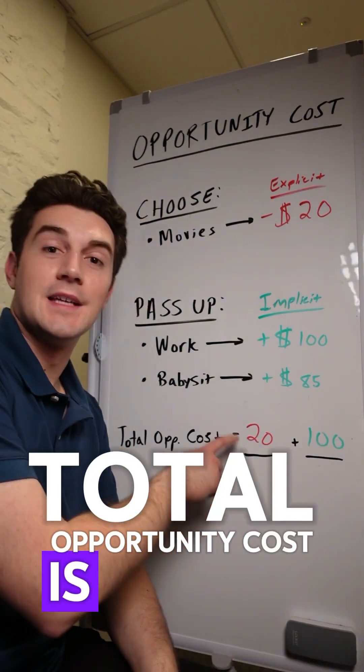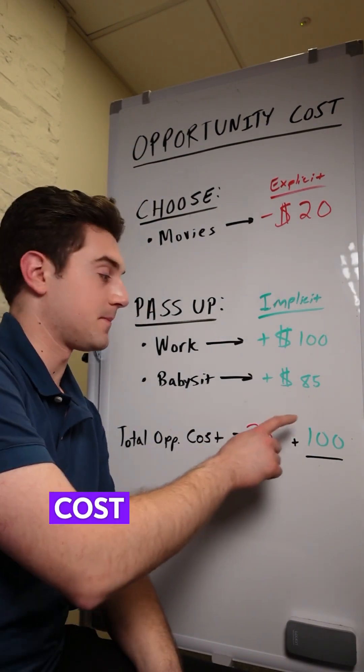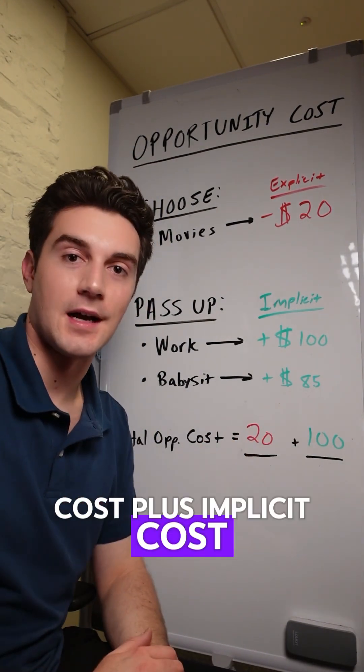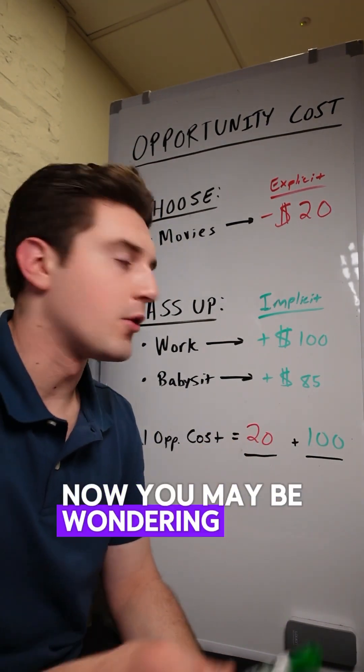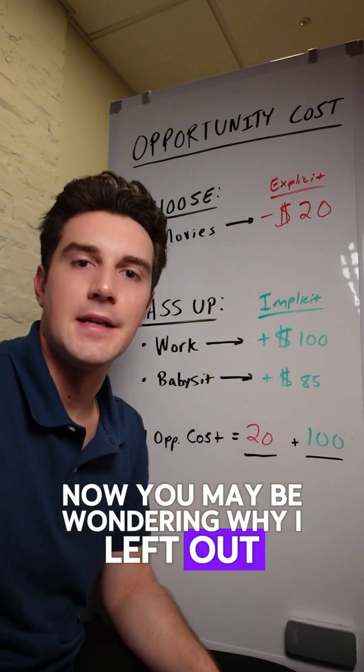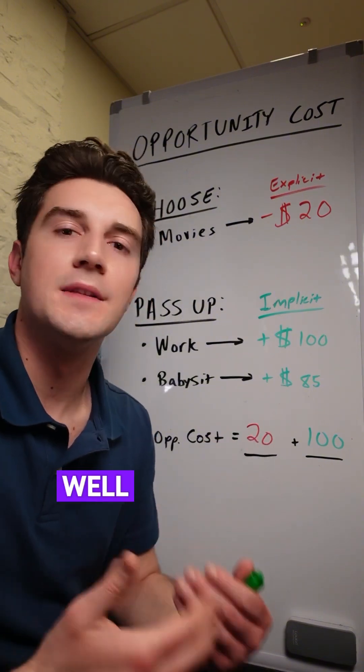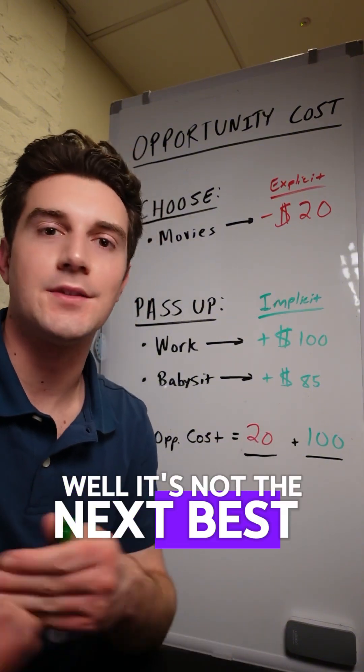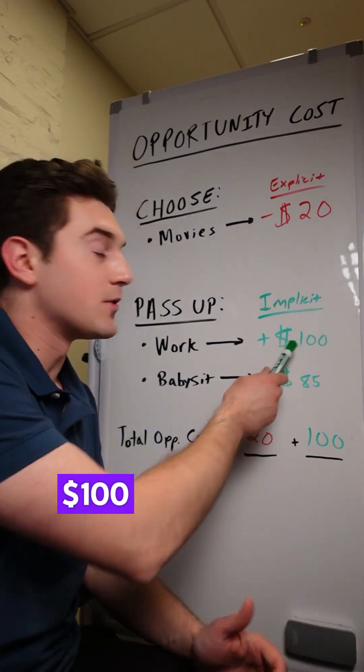Total opportunity cost is explicit cost plus implicit cost. Now you might be wondering why $85 is left out — well, it's not the next best alternative. $100 is.